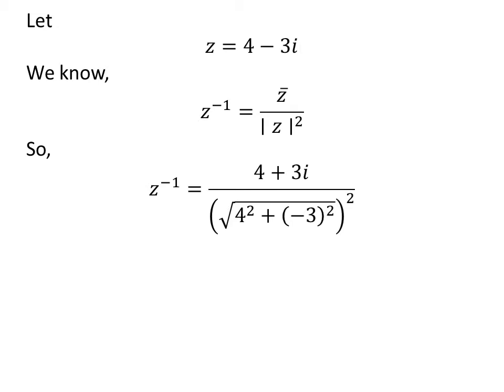As per the definition, conjugate of z is equal to 4 plus 3 times i and modulus of z is equal to square root of square of 4 plus square of minus 3. So,